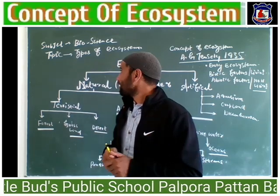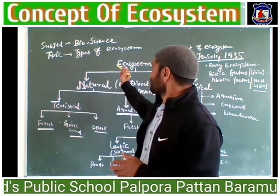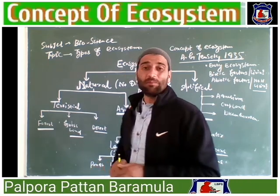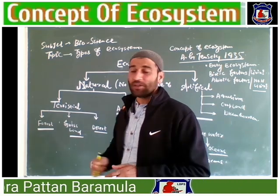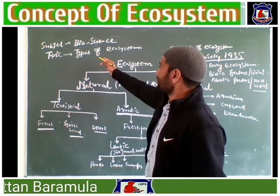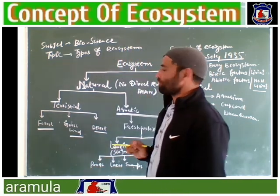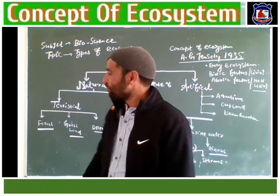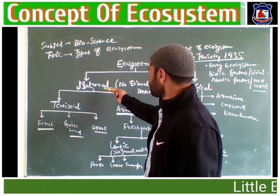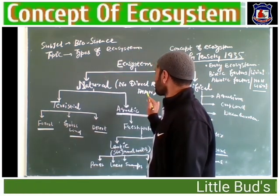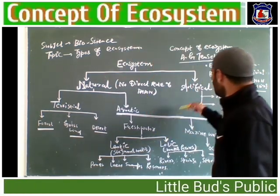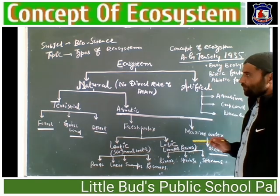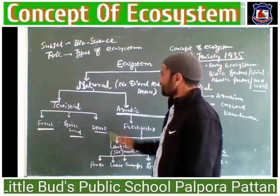Now let's start the main theme of our topic, that is the types of ecosystem. There are two main types of ecosystem: one is natural ecosystem and another is artificial ecosystem.